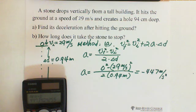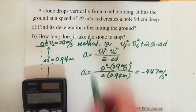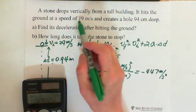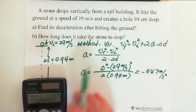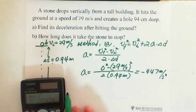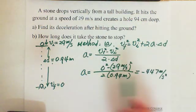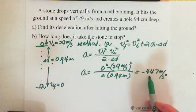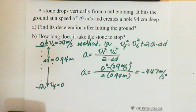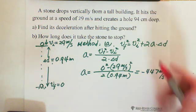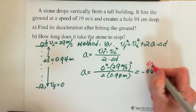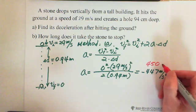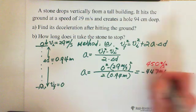Since 29 and 94 are both two significant figures, we round the acceleration to two significant figures: approximately negative 450 meters per second squared. The negative sign indicates deceleration.